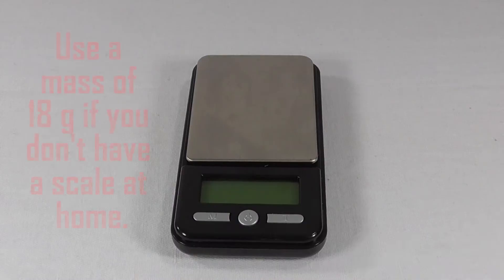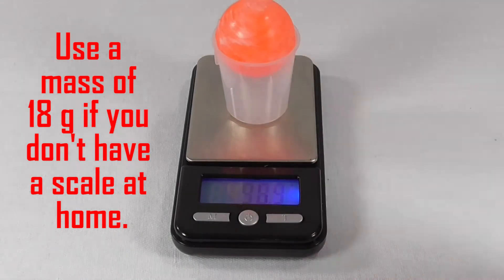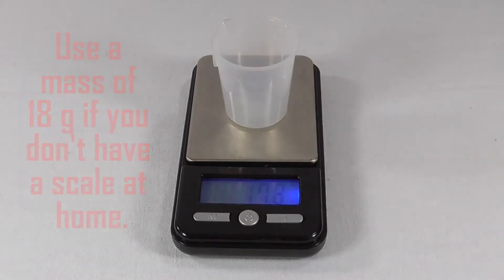One, measure the mass of the super ball and record it in the data table. Use a small measuring cup to keep the ball from rolling off, but remember to zero the scale.